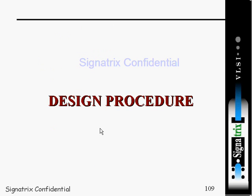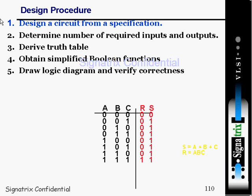Now coming to the combinational circuit design — we'll see the design procedure. The first step is to design a circuit from a specification: read the specification and design based on it. The second step is to determine the number of required inputs and outputs — how many input ports and output ports. Based on that, implement a truth table, then form boolean functions, draw the logic, connect it, and verify it.